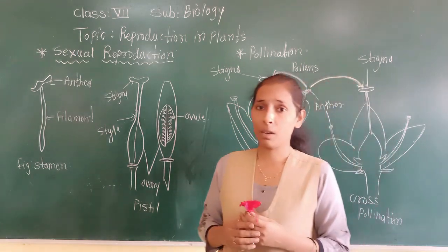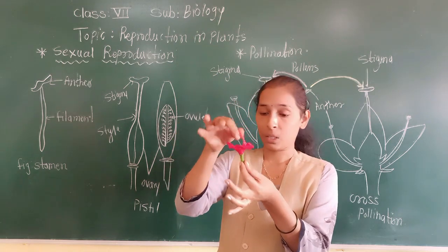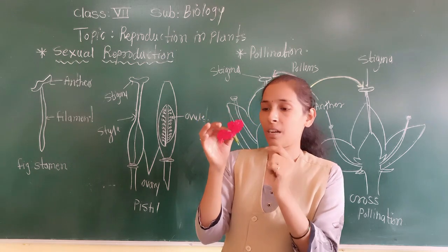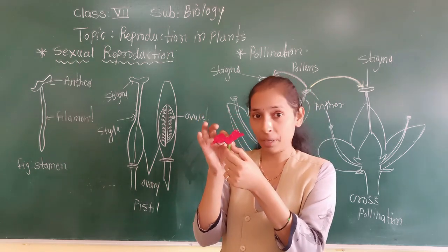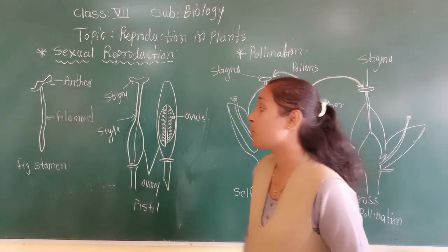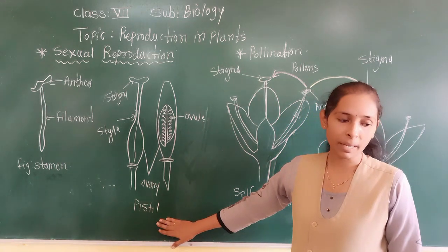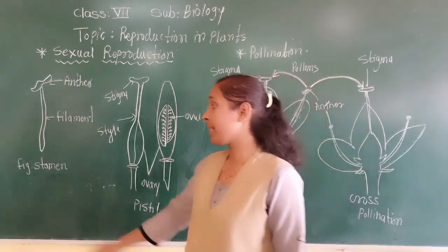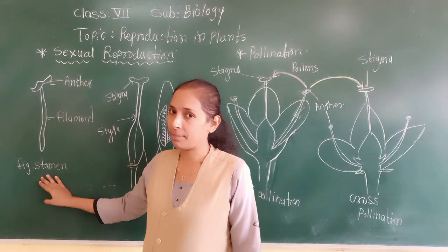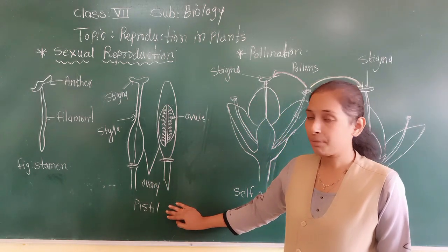The flowers have different parts. We can see the colorful petals. Outside there is a solar part called the thalamus. After that there are the sepals. Then we come to very important parts — the stamen and the pistil. The stamen is the male reproductive organ in a flower, while the pistil is the female reproductive organ in a flower.